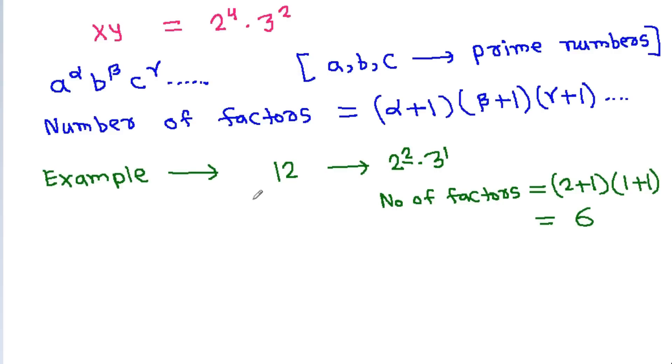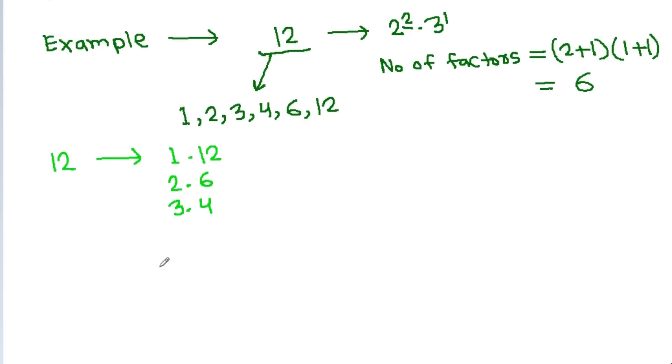The 6 factors of 12 are 1, 2, 3, 4, 6, and 12. This means 12 can be written as a product of two integers in 6 different ways: 1×12, 2×6, 3×4, 4×3, 6×2, and 12×1.